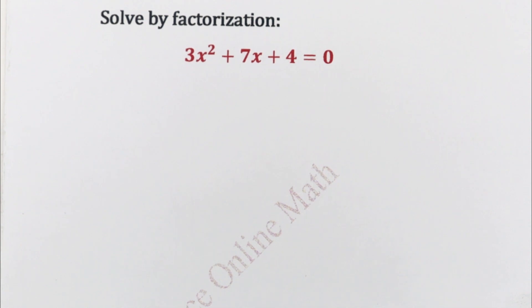Welcome to Calvin's online math. Let us look at this nice equation. Solve by factorization. So we have 3x squared plus 7x plus 4 is equal to 0.